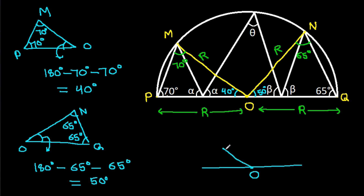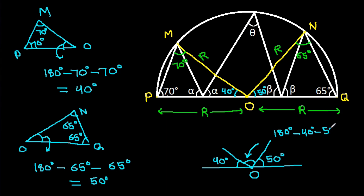So this angle will be 180 minus 40 minus 50 degrees, that will be 90 degrees. So this angle will be 90 degrees.